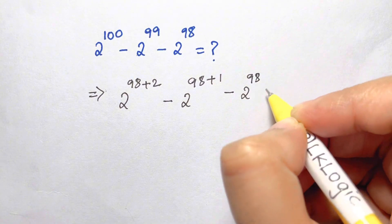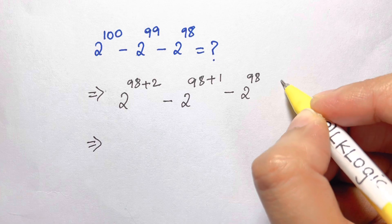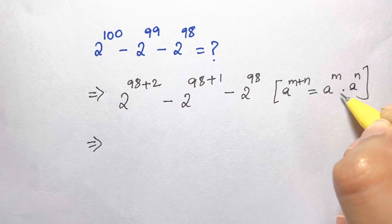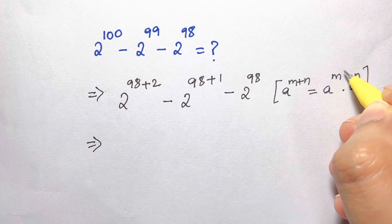Now what we can do is, you know this law right? a to the power of m plus n is what? When you have same bases in multiplication, you add the powers. So here the powers are added, now we're going to split that.